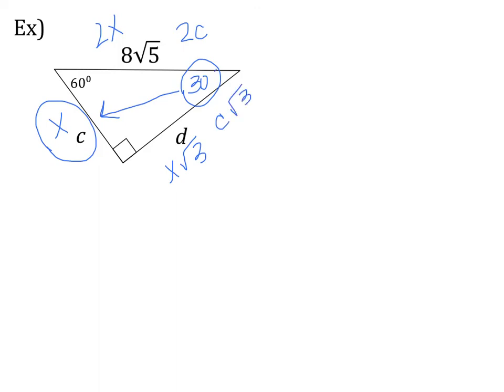Whenever you solve one of these triangles, you always start with the side that you know. In this case it's our hypotenuse, 8√5. I know that it's equal to 2c. So 8√5 = 2c. I need to get c by itself, so I'm going to divide both sides by 2. Since 8 and 2 are both outside the radical, I can simplify. So c = 4√5.